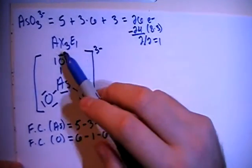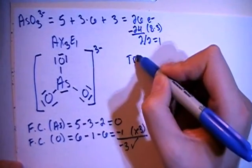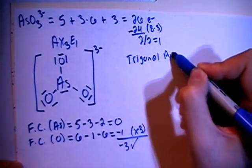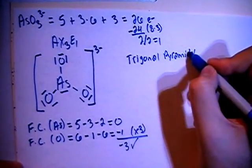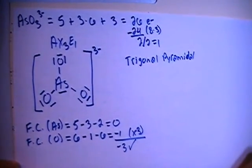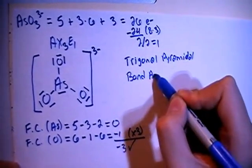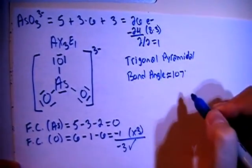In terms of shape, with the AX3E1 type of structure, you're going to get a shape that is called trigonal pyramidal, and when you have the trigonal pyramidal shape, the bond angle is going to be approximately 107 degrees.